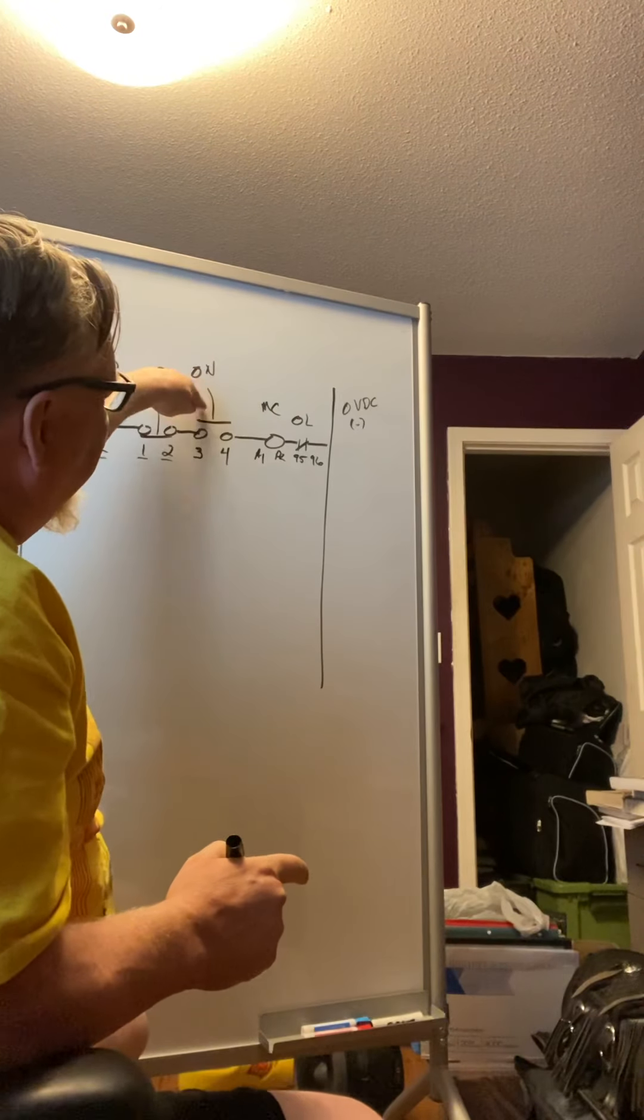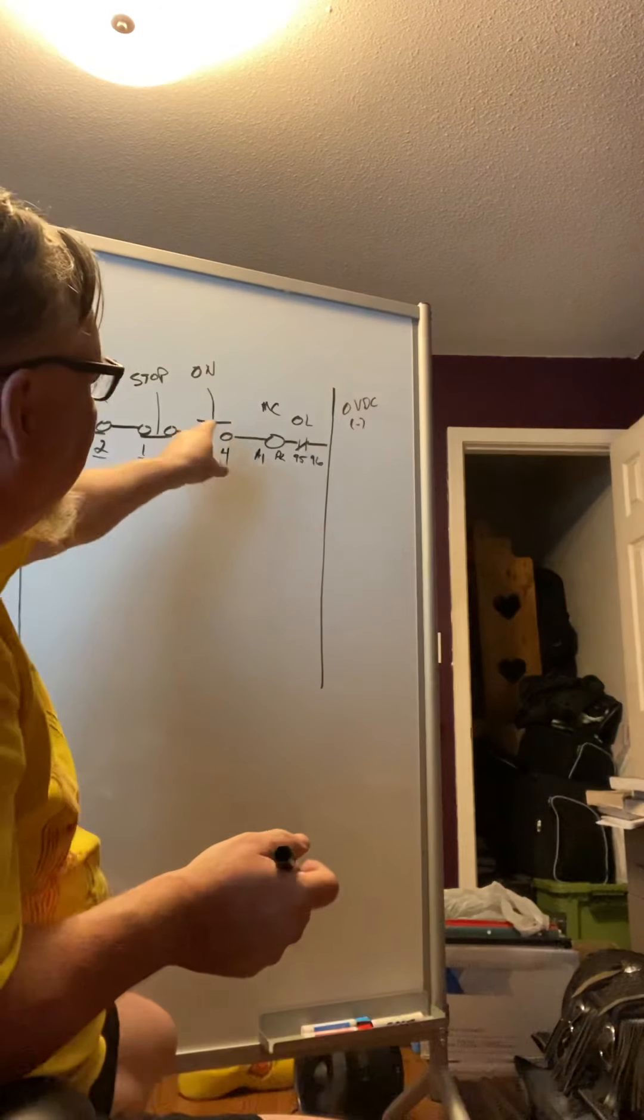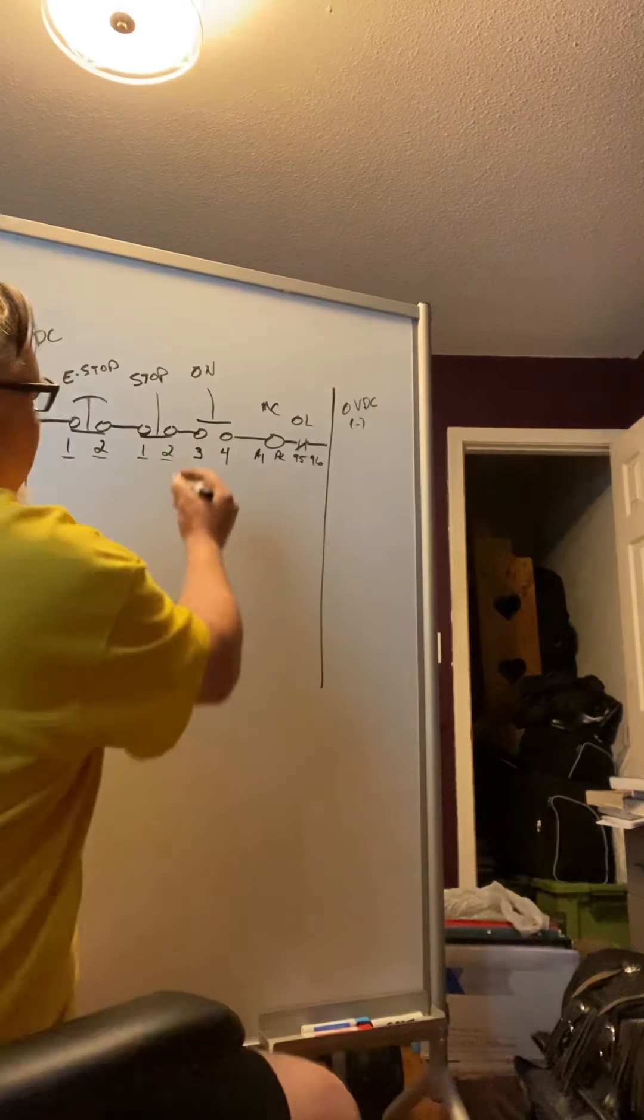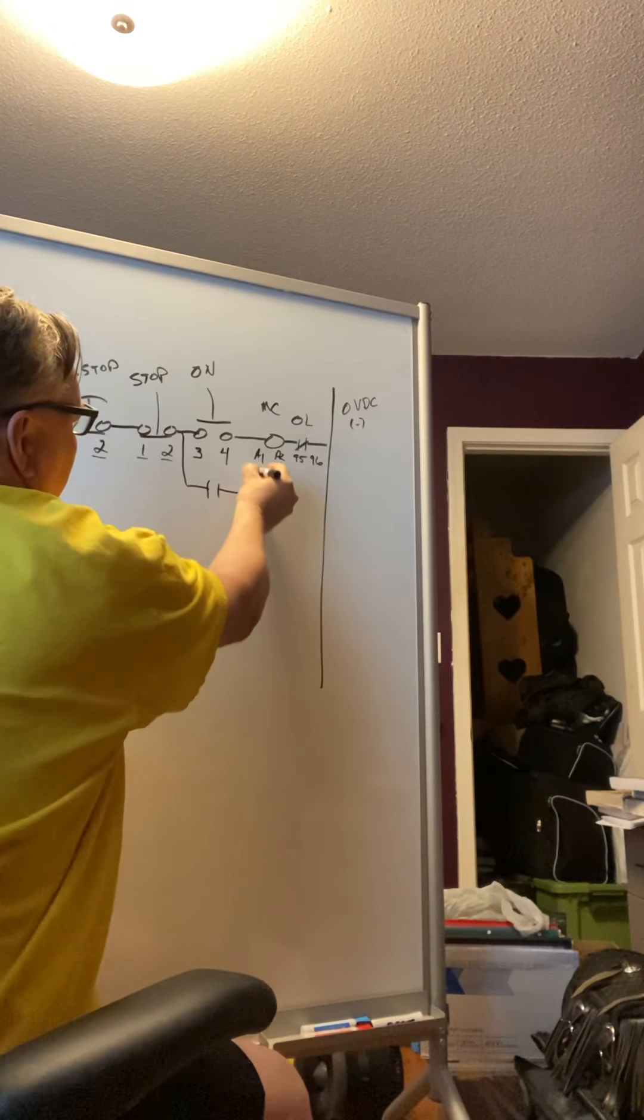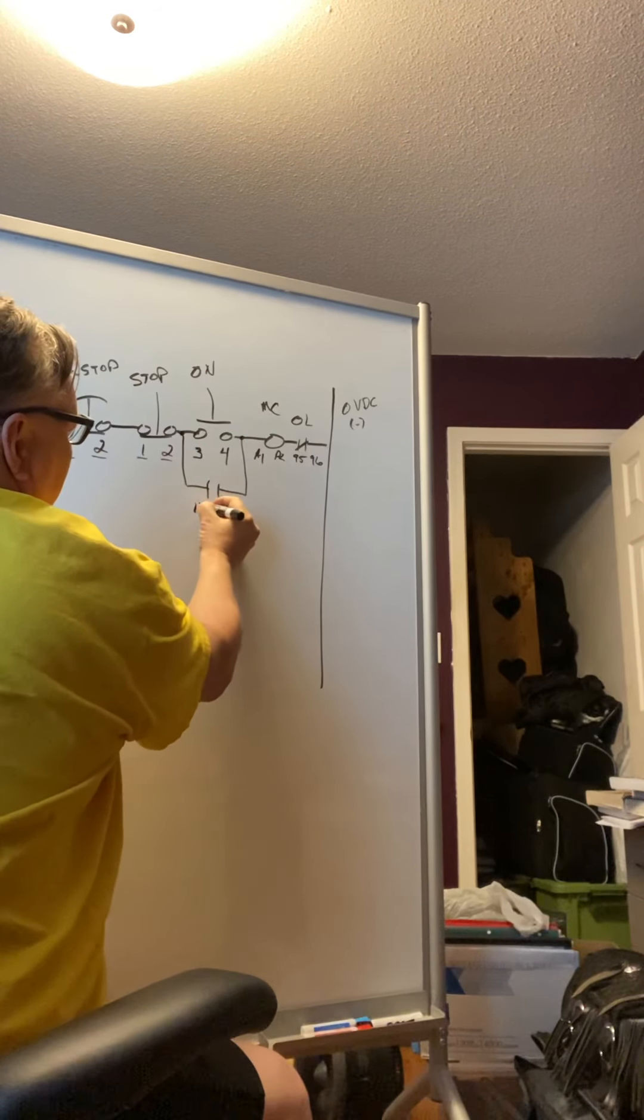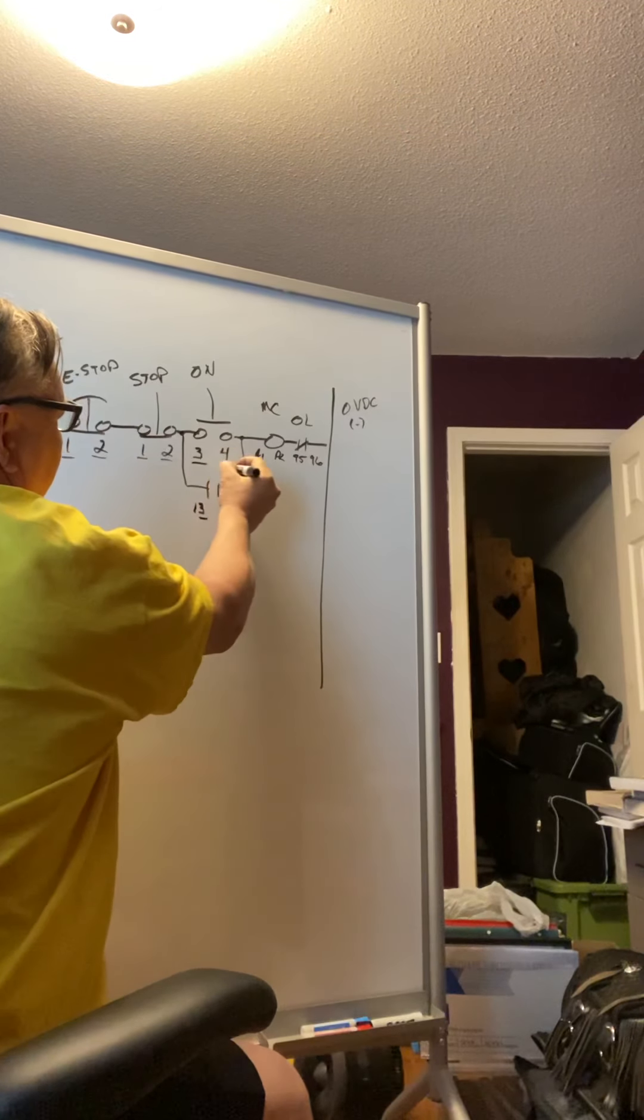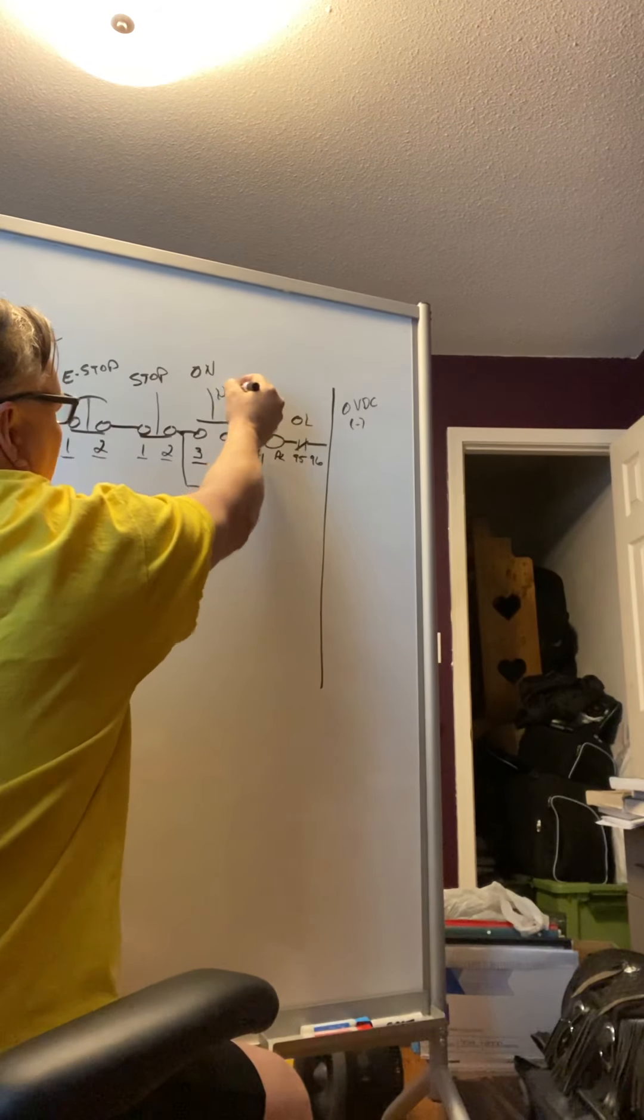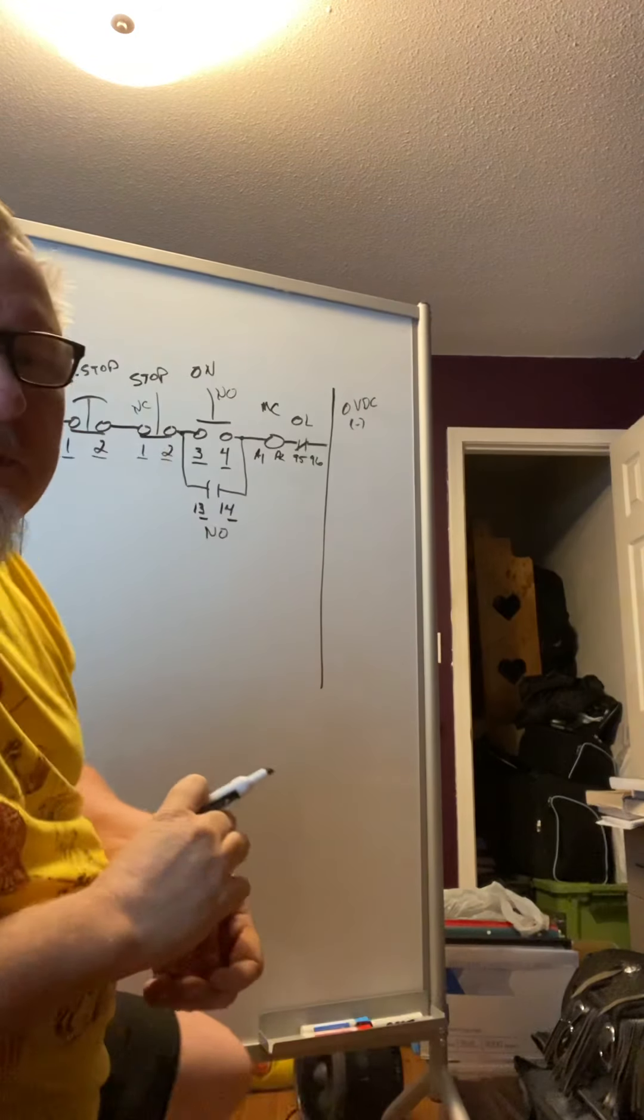Now there's one piece that we're missing right now for this to work right now. If we press this switch, the contactor would come on and the motor in itself would come on. But as soon as you let that switch up, it would stop. So what we need is a latch and that latch comes down here like this. And this is going to be 13, 14. And if you'll notice the three, four, this is normally open. This is normally open. This is normally closed. Normally closed.